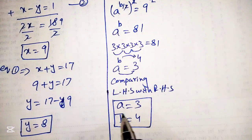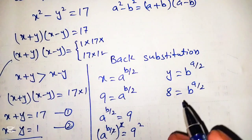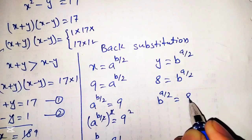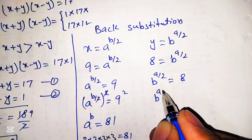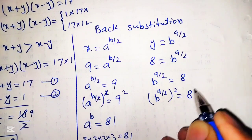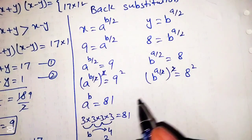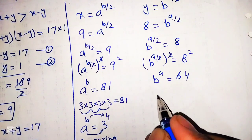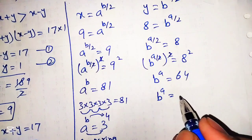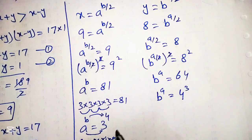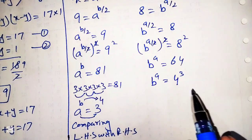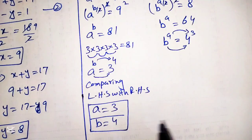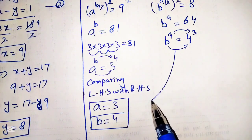Similarly from the other substitution, b raised to power a over 2 equals 8. Squaring both sides, b raised to power a equals 64. Since 64 equals 4 raised to power 3, comparing left and right hand sides we again get a equals 3 and b equals 4. So the values of a and b from both equations are the same, confirming our solution.